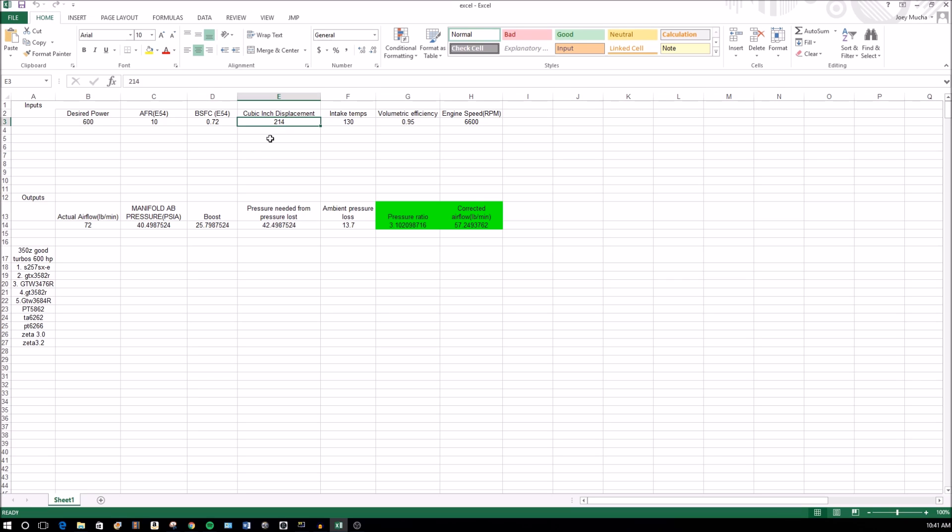Cubic inch displacement - you can calculate that just by taking your liters if you have a liter motor and times that by about 60.7 or something, and it gives you this number. Intake temps I just estimated about 130 degrees Fahrenheit, so this is in Fahrenheit.